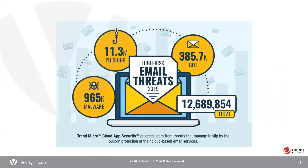Trend Micro has a product called Cloud App Security, and in 2019 we actually caught over 12 million high-risk email threats, including phishing, business email compromise, and malware. These threats were those missed by Office 365 security. Our added security layer was able to detect and block those threats for our customers.